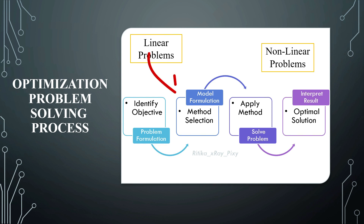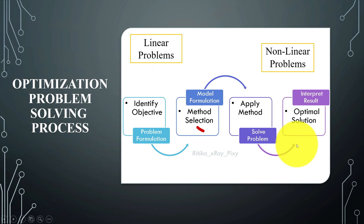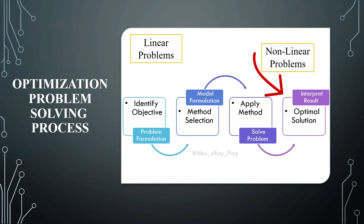Next is model formation. Several methods are used to solve optimization problems, such as linear programming, non-linear programming, and dynamic programming. The choice of method depends on the problem constraints, complexity, and resources available. Then apply the selected method to find the optimal value for the objective function, and finally interpret the results to determine whether the solution is feasible and meets the problem requirements.